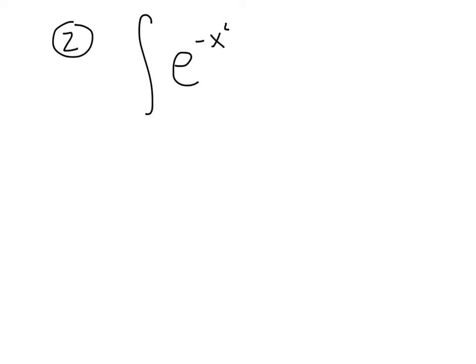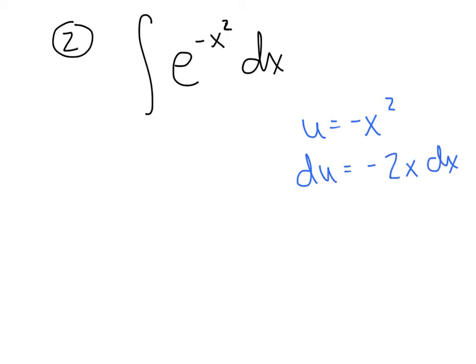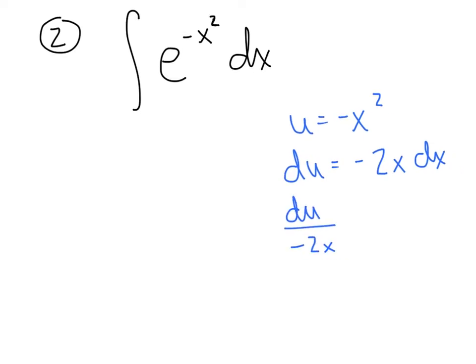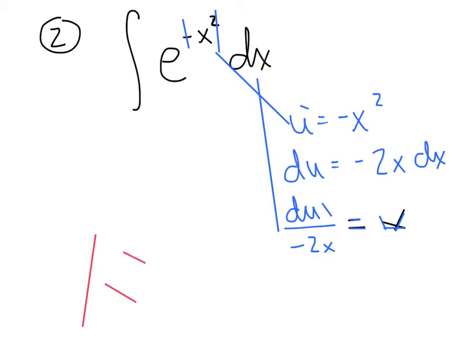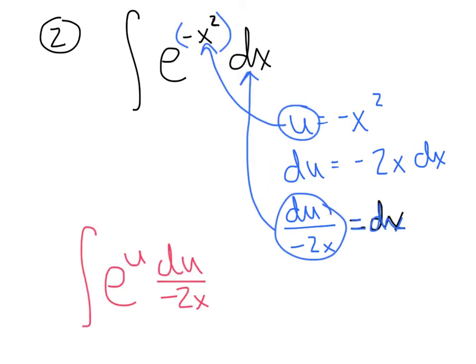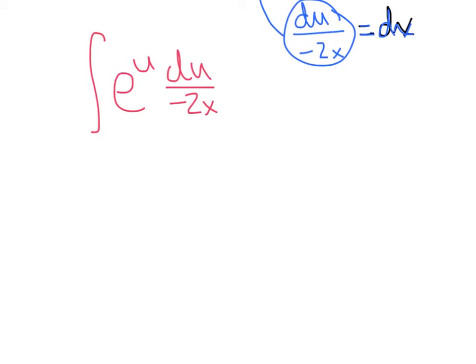Our second example has a peculiar element: integrate e raised to the negative x squared power. We let u equal negative x squared. The derivative is negative 2x dx, so dx equals du over negative 2x. Substituting: we get e to the u times du over negative 2x. The problem is we cannot cancel all the x's — this lone x in the denominator has nothing to cancel with.